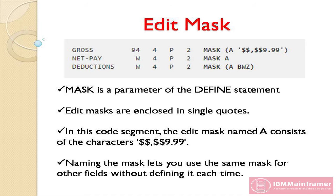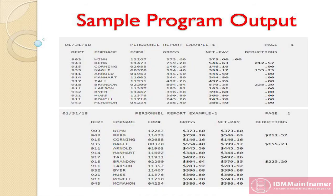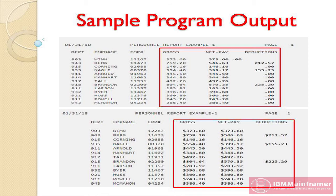After adding the edit masks, let's see how our sample program output looks. The first report is without a mask, and the second report is with a mask. In the last three fields of the report, leading zeros are suppressed and each value has a dollar sign.